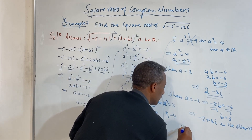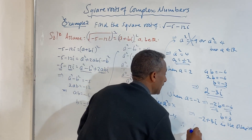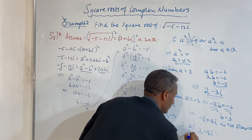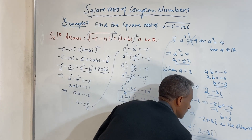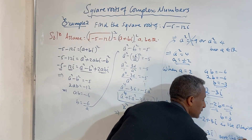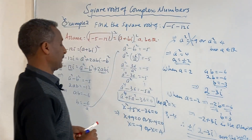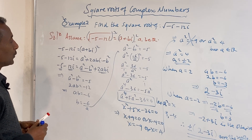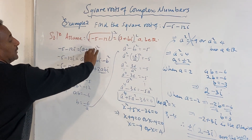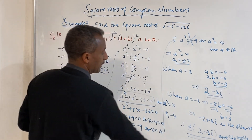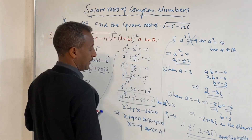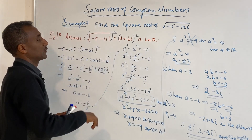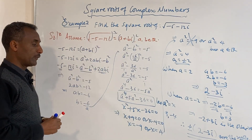Therefore, the two square roots of minus 5 minus 12i are 2 minus 3i and minus 2 plus 3i, which we write as plus or minus (2 minus 3i). Thank you for watching.